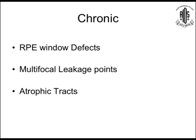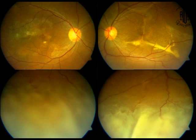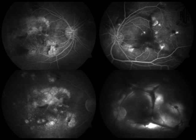In chronic CSC, the hallmarks are window defects, retinal pigment epithelial window defects, multifocal leakage points, and atrophic tracts — already described by Dr. George. Showing some photo examples: this is the typical atrophic tracts, and you can see some leakage points. In one color photo, you can see a huge inferior detachment with a bad posterior pole with subretinal fibrosis. Another chronic CSC case shows a large area of posterior pole RPE changes, window defects, and some leakage still present.